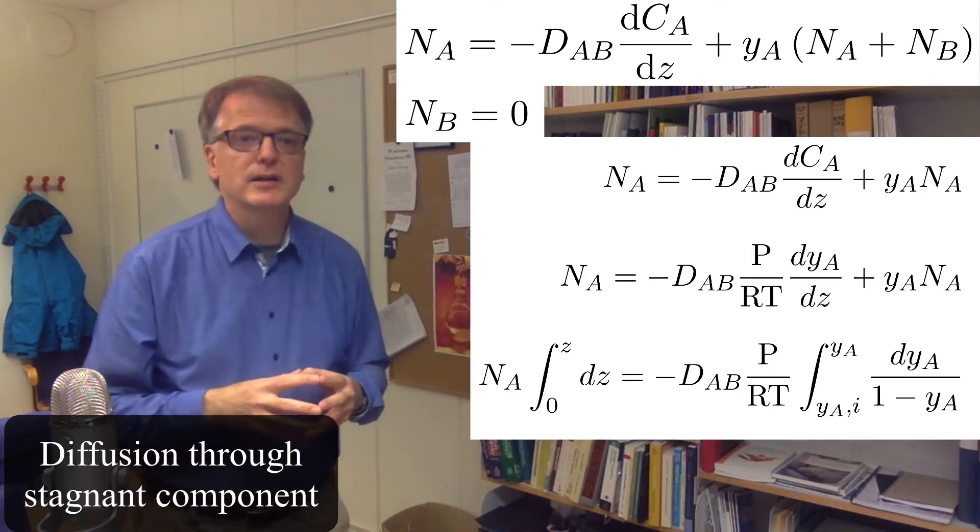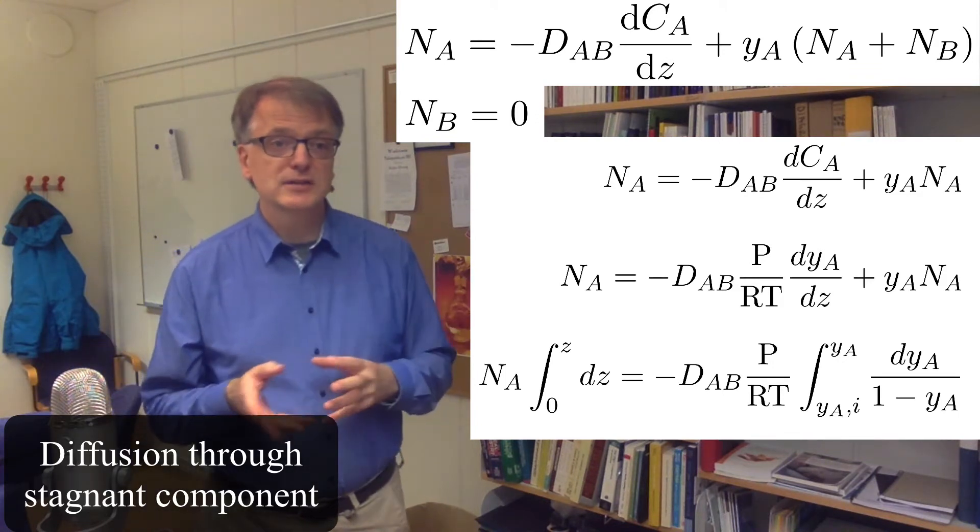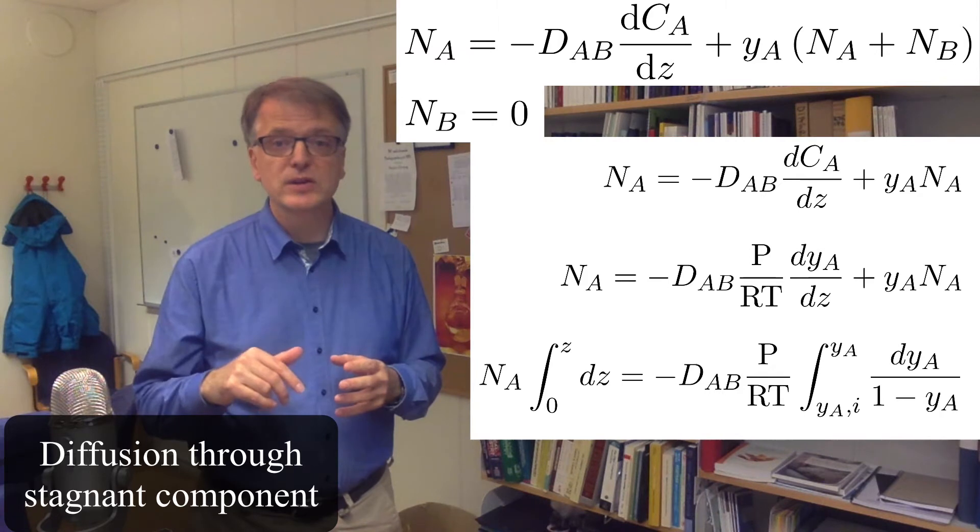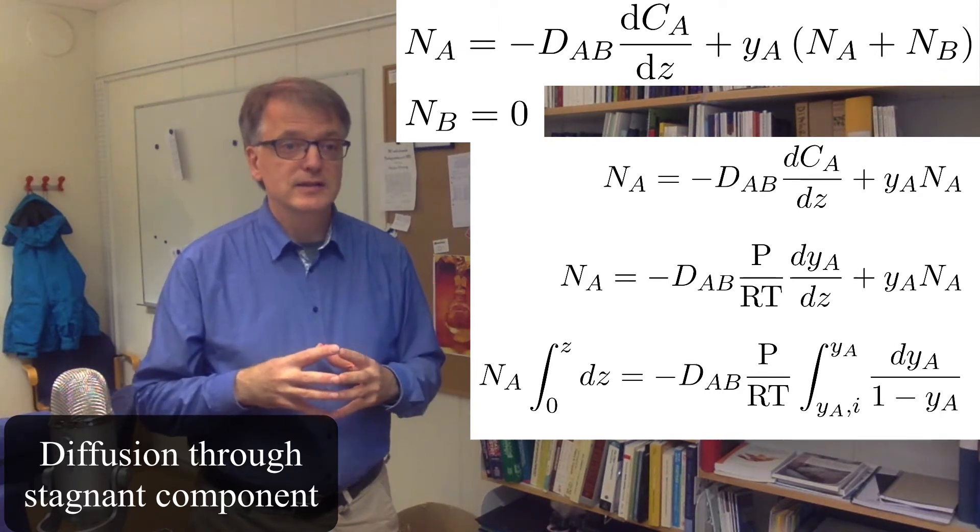So we get Na times 1 minus yA equals minus diffusivity times P divided by RT and dyA divided by dz.